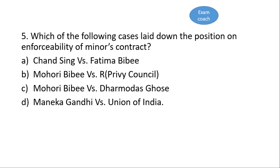The fifth question is: which of the following cases laid down the position on enforceability of a minor's contract? C is the correct option — Mohori Bibi versus Dharmadas Ghosh. The Privy Council laid down the position on enforceability of a minor's contract in Mohori Bibi versus Dharmadas Ghosh in 1903.